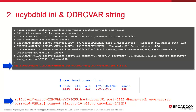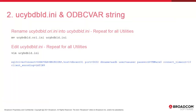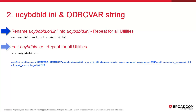Our ODBC var string should look like this. We created an empty database called aadb, a user called aauser, and the password. We're connecting to the dbhost. We rename ucbdb_ld.ori.ini as .ini. We do this for dbload, but you'll need to do this for all the other INIs as well. Then we edit the dbload.ini and set the ODBC var so it can connect to our PostgreSQL database with the appropriate properties.